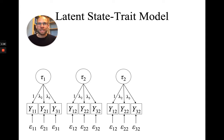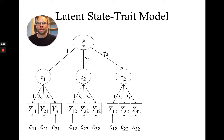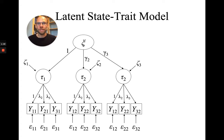The first-order model has these latent state factors. According to latent state trait theory, latent state factors contain both trait and state residual components. These components can be modeled by imposing a second-order factor structure where we have a trait factor xi that accounts for the across-time covariances of the latent state factors. The trait factor represents what is stable across time, or person-specific — between-person differences in trait scores.